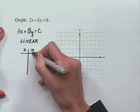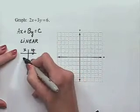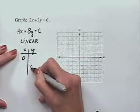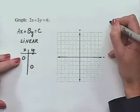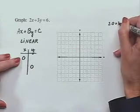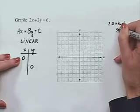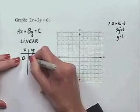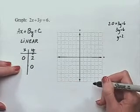Two convenient points to work with are called the intercepts. We'll find them by letting X equal 0 and solving for Y, then letting Y equal 0 and solving for X. To let X equal 0, we solve 2 times 0 plus 3Y equals 6. Since 2 times 0 is 0, we get 3Y equals 6, so Y equals 2. When X is 0, Y equals 2.